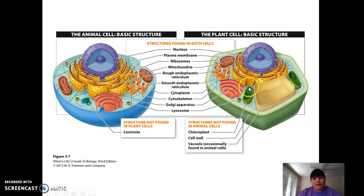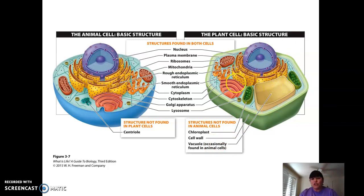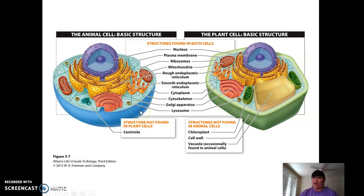Plants have some extra structures not found in animal cells. Plant cells have chloroplasts, which have to do with photosynthesis — grabbing the sun's energy and converting it into sugars. Plant cells have large vacuoles where they store that sugar. And plant cells have a cell wall, like the prokaryotes, made out of cellulose — animal cells do not have that.